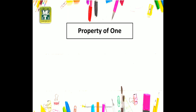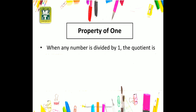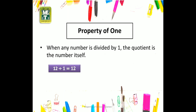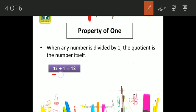Now, property of one. Property of one states that when any number is divided by one, the quotient is the number itself. یعنی جب بھی ہم کسی بھی number کو one سے divide کرتے ہیں تو quotient واپس وہی number ہوتا ہے۔ یہاں پہ دیکھیں — example کے ذریعے: ہم نے 12 کو one سے divide کیا، اور جو number واپس آیا وہ 12 ہی ہے — وہی number جسے ہم نے divide کیا تھا۔